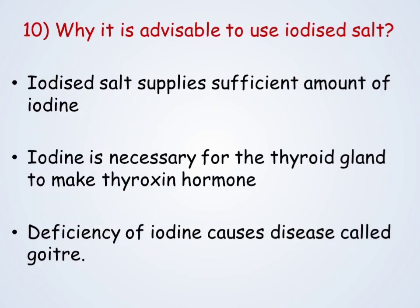Why is it advisable to use iodized salt? Iodized salt supplies a sufficient amount of iodine in our diet. Iodine is necessary for the thyroid gland to make the hormone thyroxine. Deficiency of iodine causes a disease called simple goiter, the main symptom of which is a swollen neck. Hence iodine is necessary in our diet.